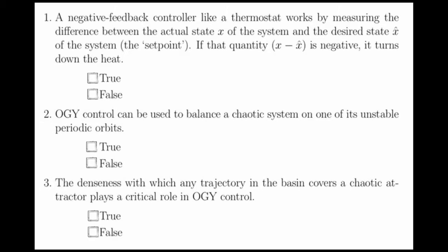For Question 1, a negative feedback controller like a thermostat works by measuring the difference between the actual state x of the system and the desired state x-hat of the system. If the quantity x minus x-hat is negative, it turns down the heat. And this is false.